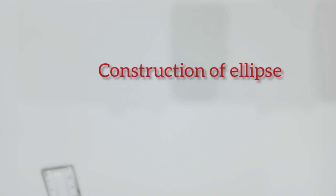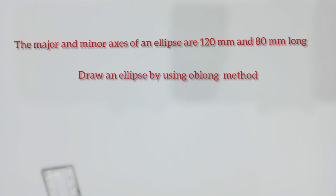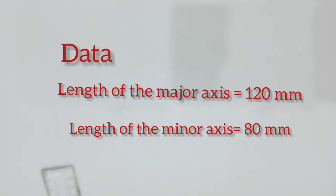Welcome to the discussion of conic sections. Under this we are discussing the construction of ellipse. The given problem: the major and minor axis of an ellipse are 120 mm and 80 mm long. The given data is length of the major axis is 120 mm and length of the minor axis is 80 mm.